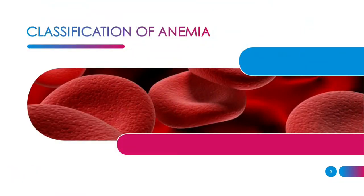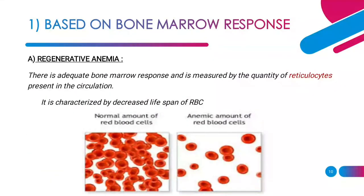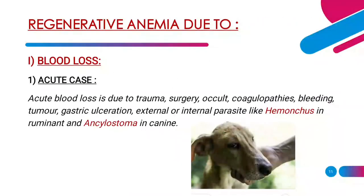Coming on to classification of anemia. Anemia can be classified in various ways. Based on bone marrow response, it is broadly divided into regenerative anemia and non-regenerative anemia. In regenerative anemia, the bone marrow responds adequately to the decreasing RBC by releasing quantities of reticulocytes into the circulation. Reticulocytes are immature RBCs. Regenerative anemia is characterized by decrease in lifespan of RBC with anemic amounts of red blood cells present.